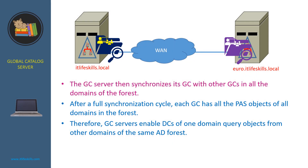The global catalog server then synchronizes its global catalog with other global catalogs in all the domains of the forest. After a full synchronization cycle, each global catalog has all the PAS objects of all domains in the forest.